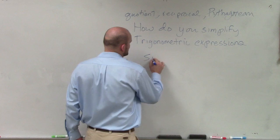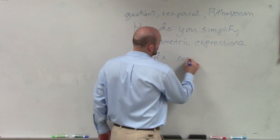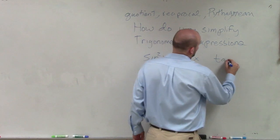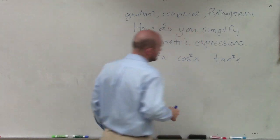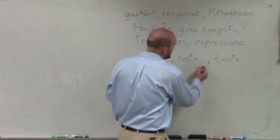But one thing I do want to talk about for you to look for when you're simplifying your trigonometric identities is looking for these terms of sine squared of x, cosine squared of x, or tangent squared of x.